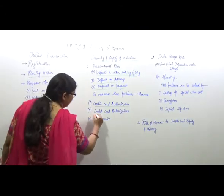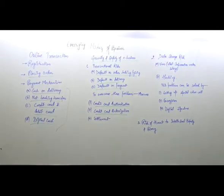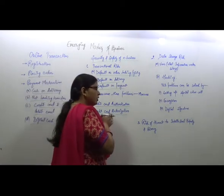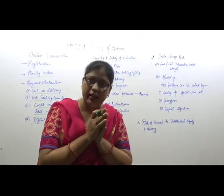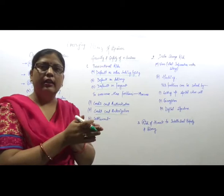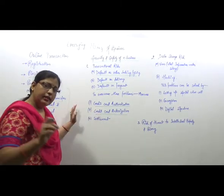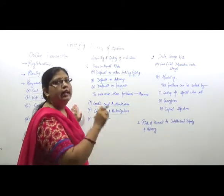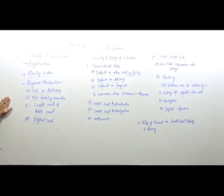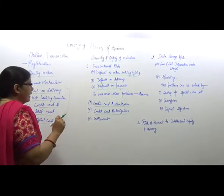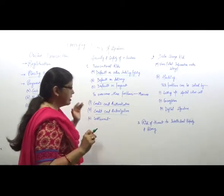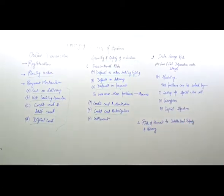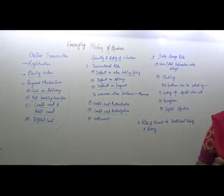The next measure is credit card authorization — this checks whether the funds are available in the credit card account of the customer or not, i.e., whether there is a sufficient amount. The next measure is settlement — once the product is dispatched or delivered, the bank will release the funds and transfer them into the businessman's account.